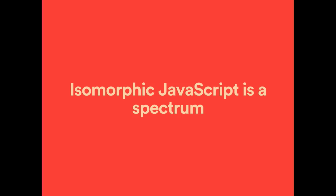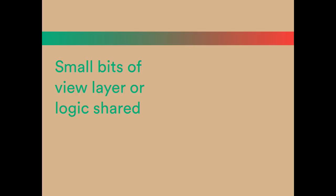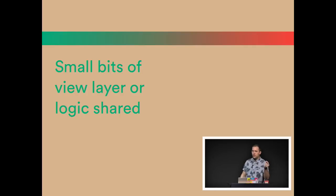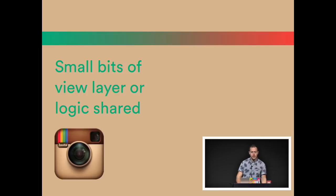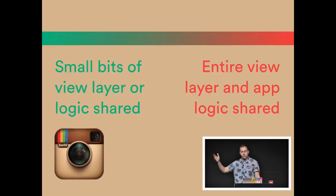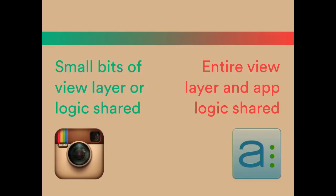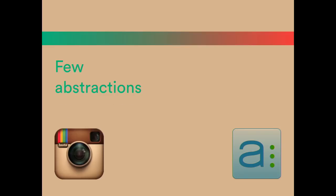Isomorphic JavaScript is a spectrum. On one end, you could share just a few bits of the view layer — like a few Handlebars templates or some libraries, a little bit of logic. Instagram is kind of along this side. On the other end, you could share your entire view layer, application logic, and whole application — that's more like Asana, the most advanced implementation I've seen. To accomplish the simple case, you don't need many abstractions. But the further you go along the spectrum, you have to create more, because the client and server are actually very different environments.